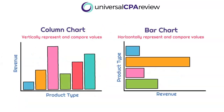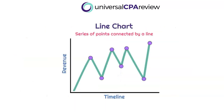Next we have the column chart and the bar chart, presented together because they're essentially the same type of chart — it just depends on direction. If the data is vertically represented, it's a column chart; if horizontally represented, it's a bar chart. The hardest part is just remembering which direction they go. After that, we have a line chart — very simple. It's just a series of data points connected by a line, and the name says it all.